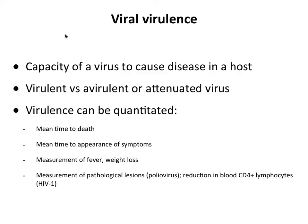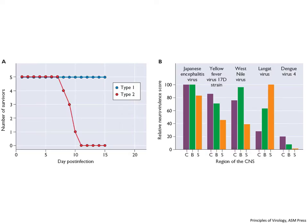You have to open up the animal that's been infected to measure pathological lesions. We do that for polio. For HIV infection, the number of CD4 T cells in the blood is a measure of virulence. Here are two virulence assays: on the left is a survival curve showing number of surviving animals — mice infected with two strains of poliovirus. The mice inoculated with type 1 survive, while those inoculated with type 2 are all dead by day 10. This is an example of survival as a readout of virulence — it's crude but one way it can be measured.